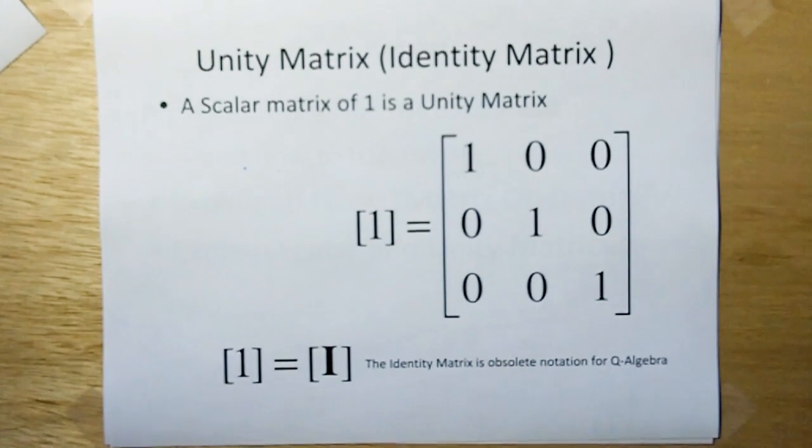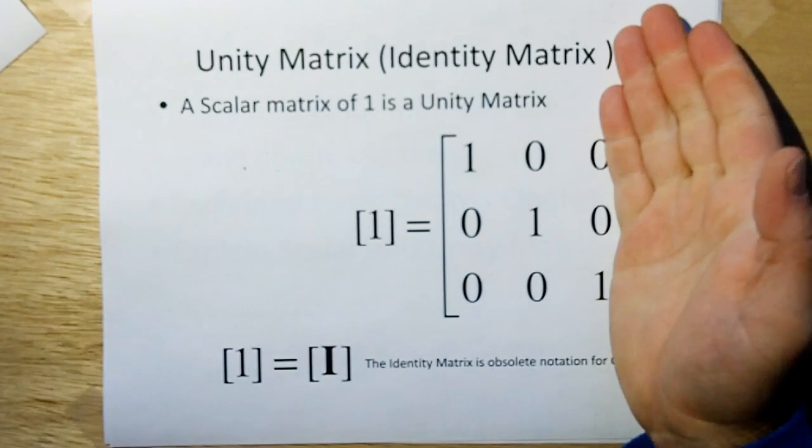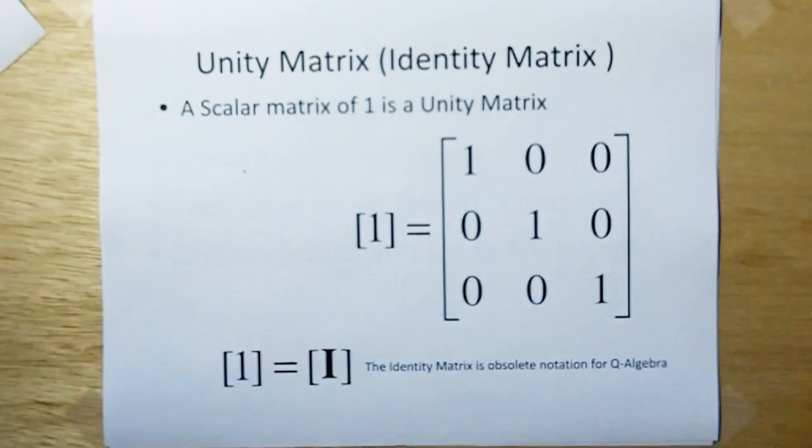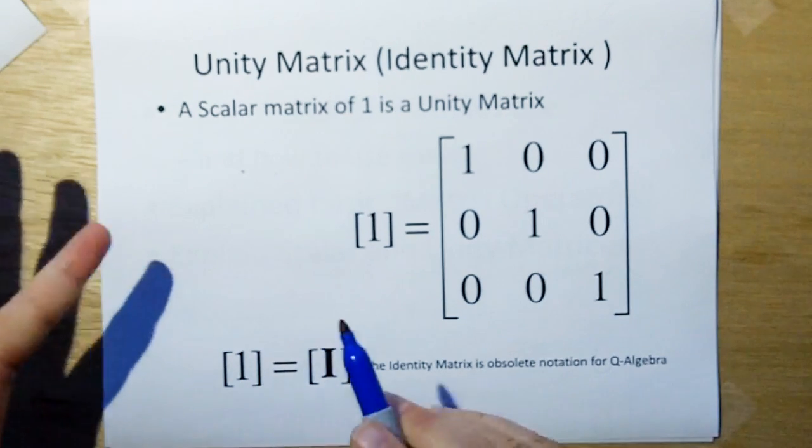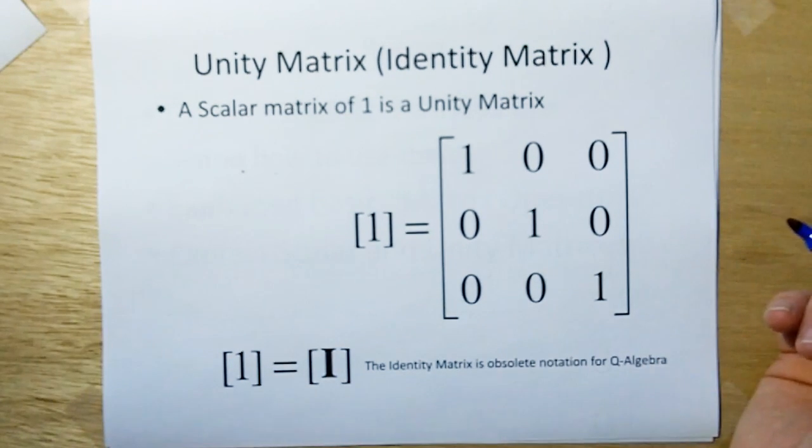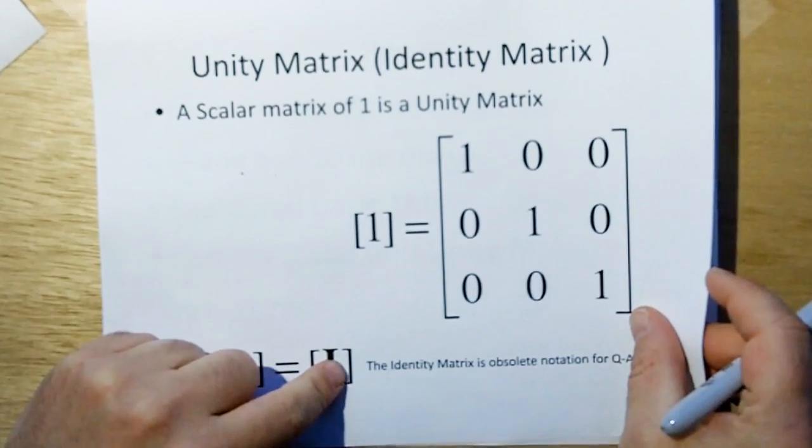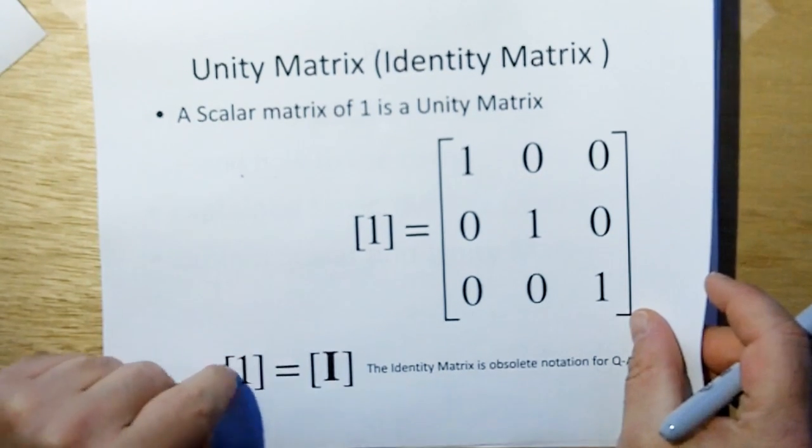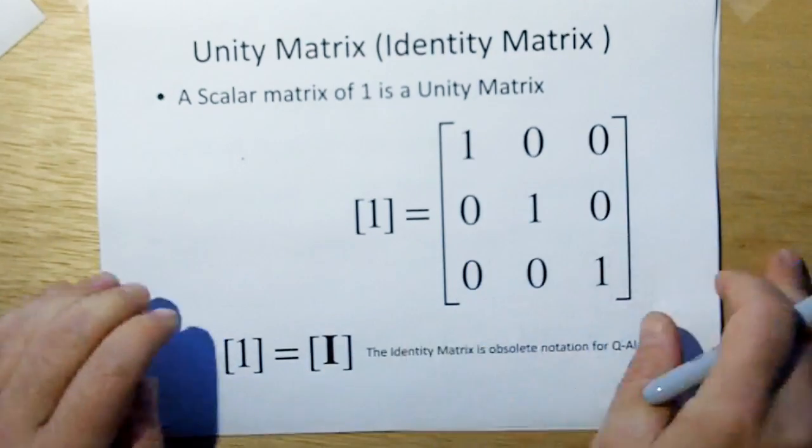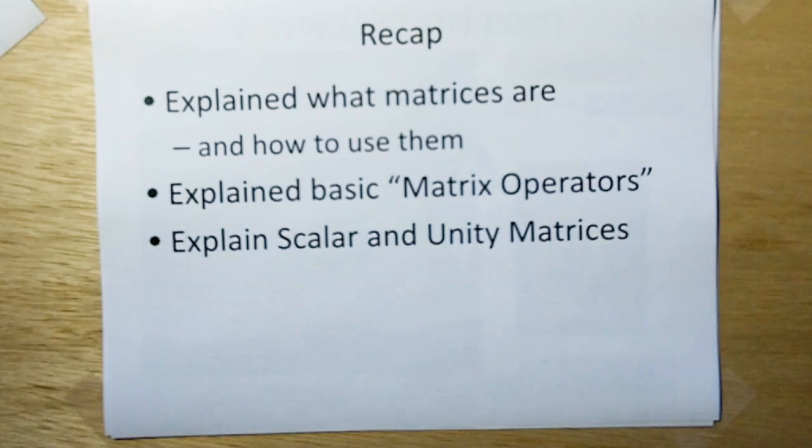The unity matrix is a scalar matrix of 1. In classical stuff, they call it identity matrix, which always pisses me off, because why not just call it a unity matrix? Why do we have to call it the identity matrix? So I'm simplifying, we're just going to call it a unity matrix, because it's a scalar matrix of value 1. We need the i though. We don't want to be using i, because we have a lot of current in electrical engineering. We don't want to be using the variable i when we have a lot of current to be modeling. So we're going to use the number 1 in brackets to represent a unity matrix, which is formally called the identity matrix.